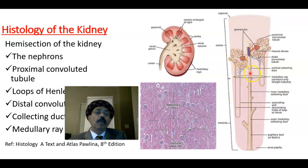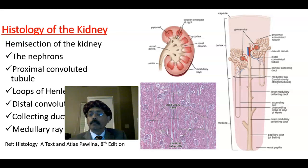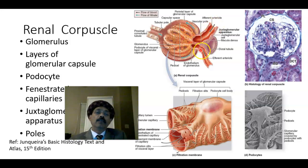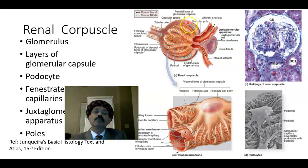We also get the cortical labyrinth, composed of the glomerulus — these are tuft of capillaries. The renal corpuscle, or glomerulus, is composed of a tuft of capillaries with an afferent arteriole and an efferent arteriole, all present within the Bowman's capsule. Bowman's capsule has an outer parietal layer and a visceral layer, which is lined by podocytes with many pedicels. The glomerulus has a tubular pole and a vascular pole.